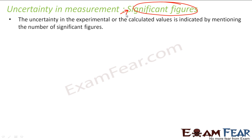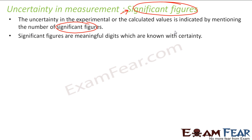The uncertainty in an experiment or any calculated values is indicated by mentioning the number of significant figures. Significant figures talk about precision — these are the digits which we know with certainty. Let's have some rules to write significant figures.